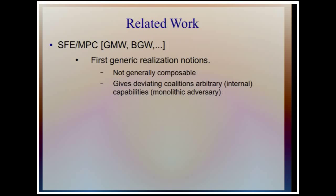Related work: we've been looking at different realization notions in cryptography for some time. In the multi-party setting, starting with GMW and BGW, these were the first ideal-real type definitions. However, they were not a priori generally composable, and they didn't tell us anything about how deviating coalitions could influence each other — because technically they model adversaries as a single monolithic adversary controlling all corrupt parties. So the influence between corrupt parties is given for free.